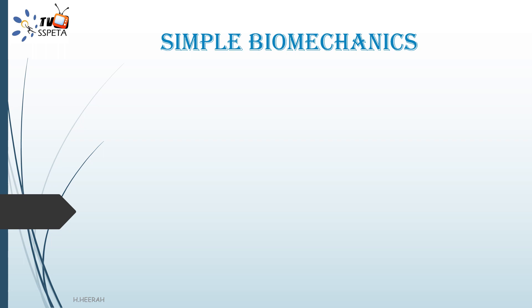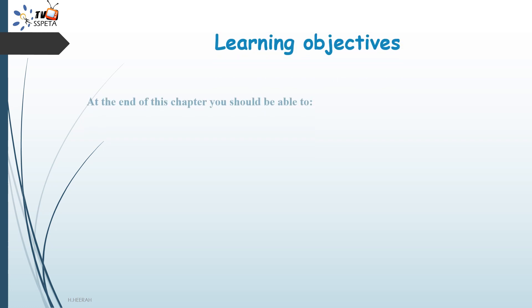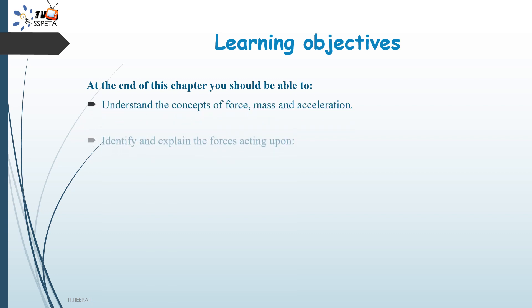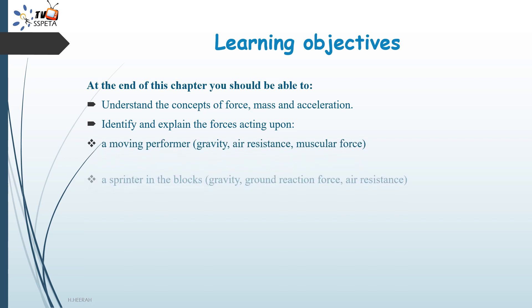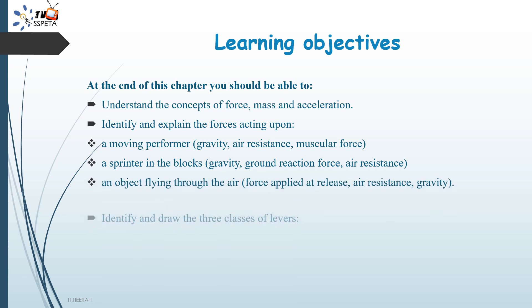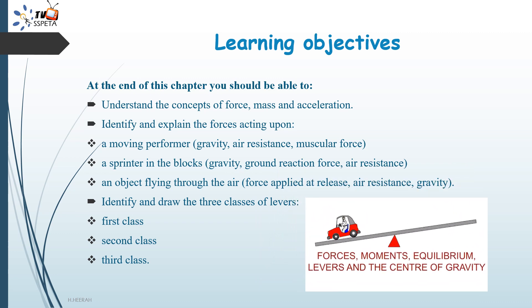Simple Biomechanics. Learning objectives: At the end of this chapter, you should be able to understand the concepts of force, mass and acceleration; identify and explain the forces acting upon a moving performer, a sprinter in the blocks, and an object flying through the air; and identify and draw the three classes of levers — first class, second class, and third class lever.